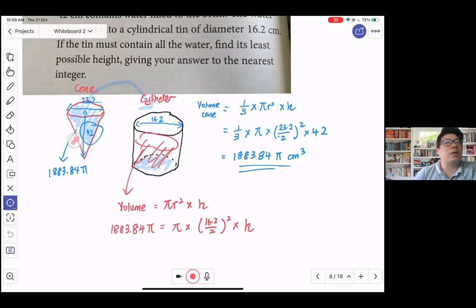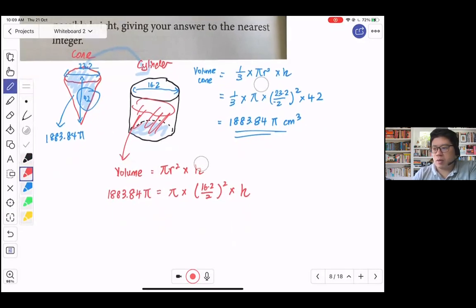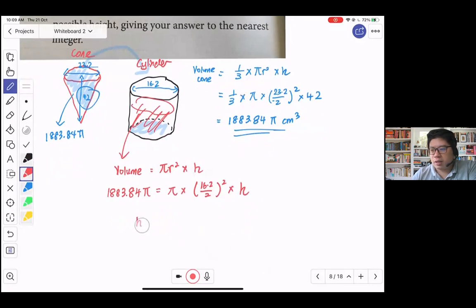So from here we can find our height. We just take 1883.84π divided by π - quite nicely you can see that - times 16.2. This will just be 8.1 squared. And your answer will turn out very nicely to be about 28.7 cm to 3 sig fig.